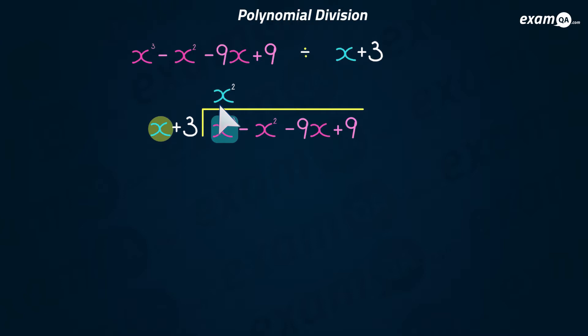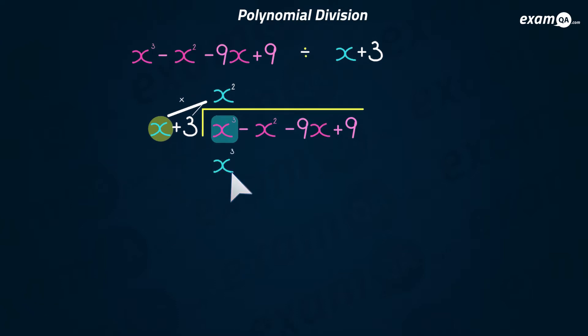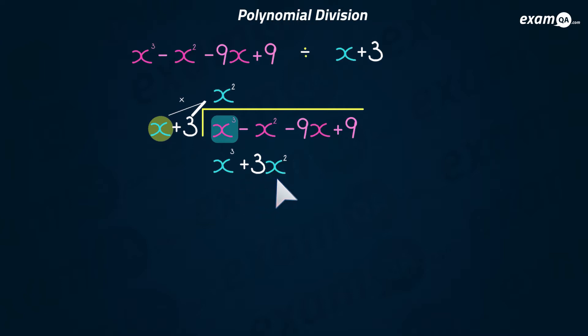From this point it's going to get a little bit tricky, so you're really going to need to concentrate. We take this x squared and multiply it back by what we're dividing by, x plus three. So first we multiply x squared by x, which gives us x cubed. Then we multiply x squared by three, giving us three x squared. We write these at the bottom, in line with the same powers — cube terms in line with cubes, square terms in line with squares.